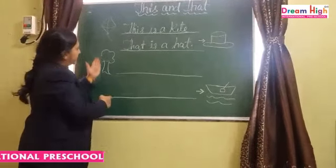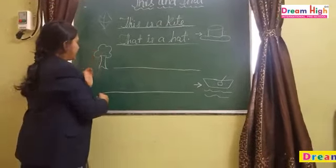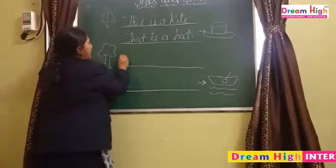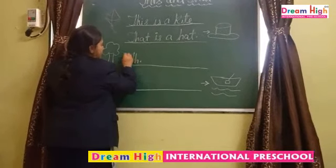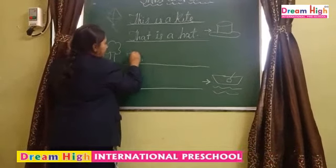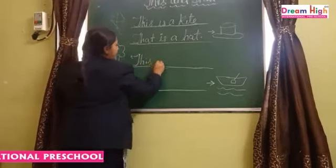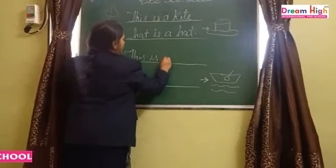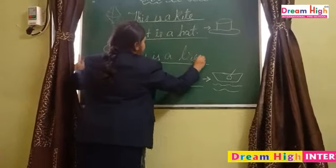Tree. Tree is near to me, this side. Then we will use 'this.' This is a tree.